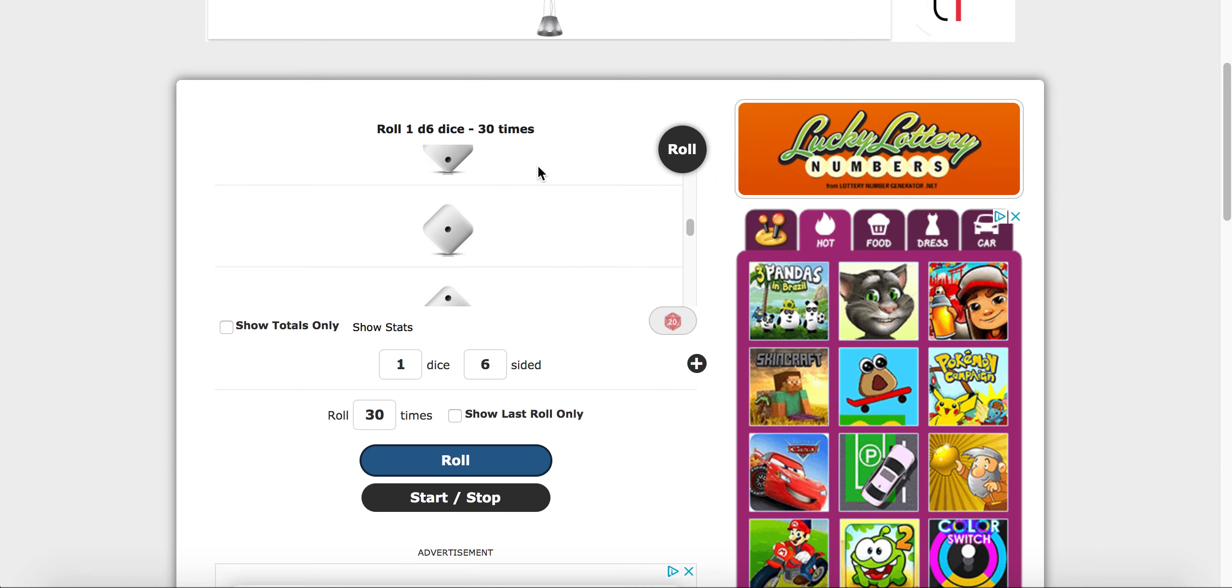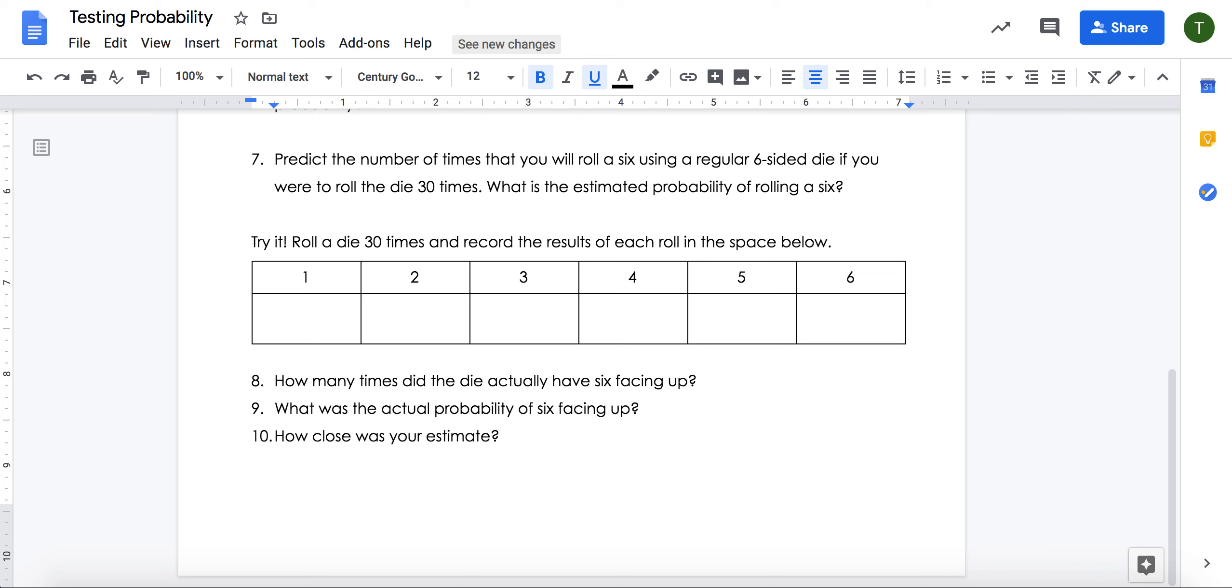Those are the two websites that you can use today to help you answer your questions. Then question 8, 9, and 10 ask you about your results of your dice rolling from question 7. Be sure to either use materials from home or use one of the websites so that you can actually try these two experiments today.